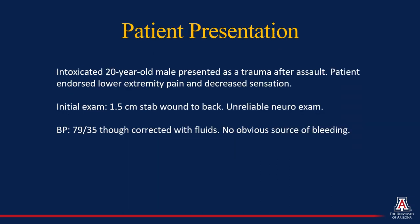This brings us to our case at hand, which involves an intoxicated 20-year-old male who presented as a trauma after an assault. The patient endorsed some lower extremity pain and decreased sensation. On initial exam, there is a 1.5-centimeter stab wound to the back. However, the neuro exam was unreliable due to overall patient intoxication and the level of pain the patient was feeling. The patient's blood pressure was initially low at 79 over 35, though it corrected with fluids. There was no obvious source of bleeding which could account for this blood pressure immediately.